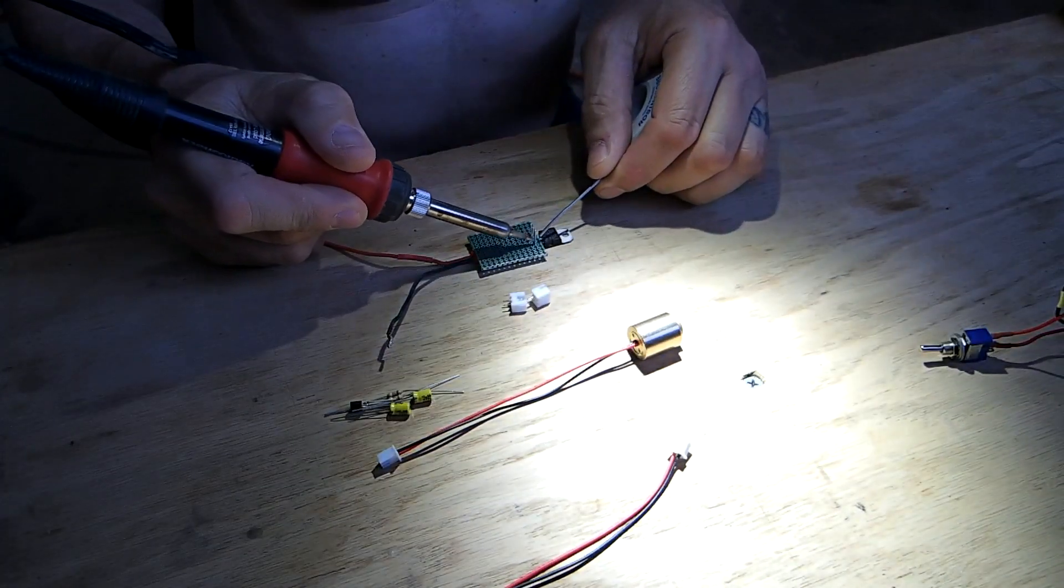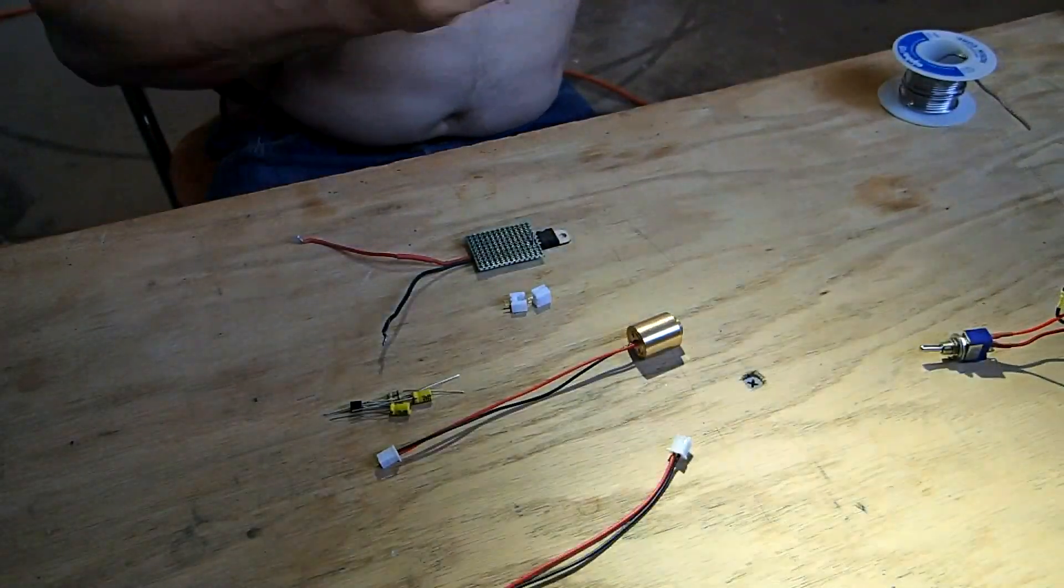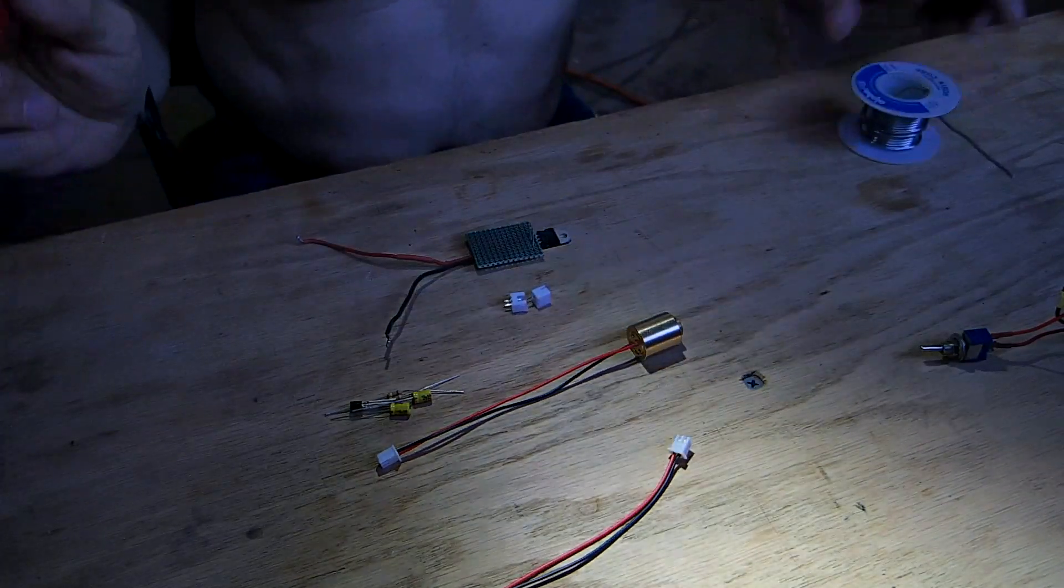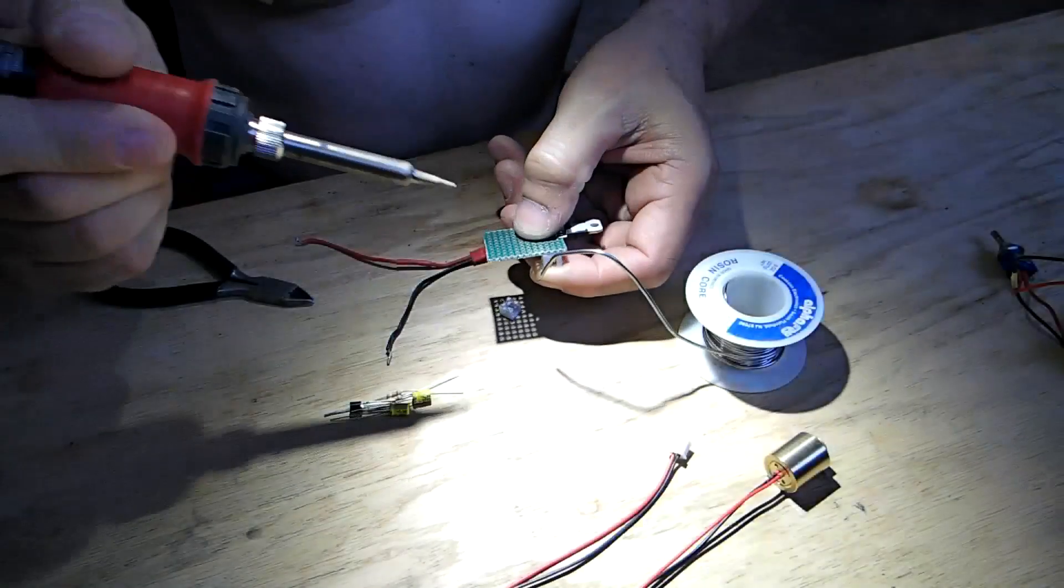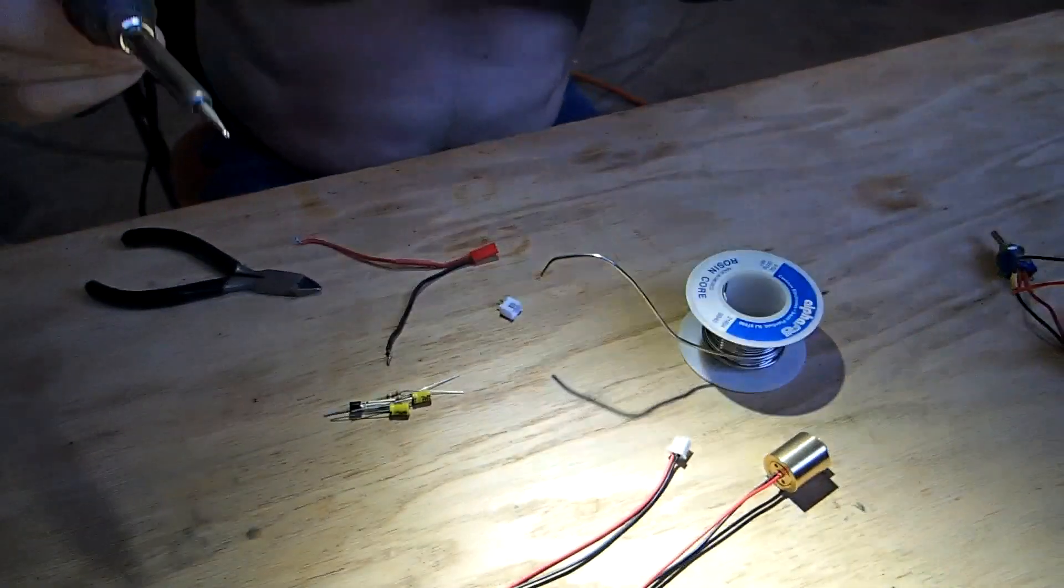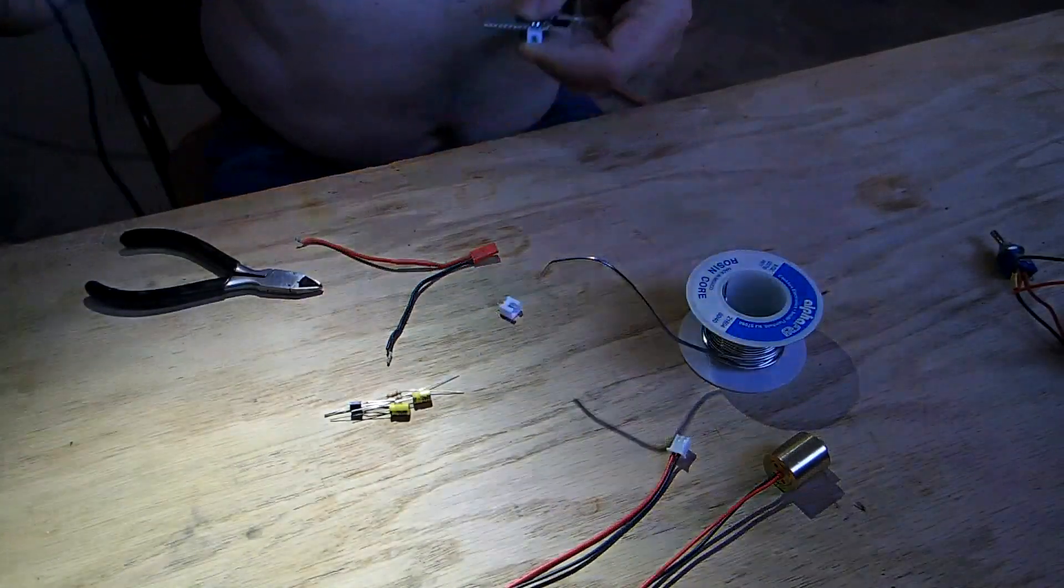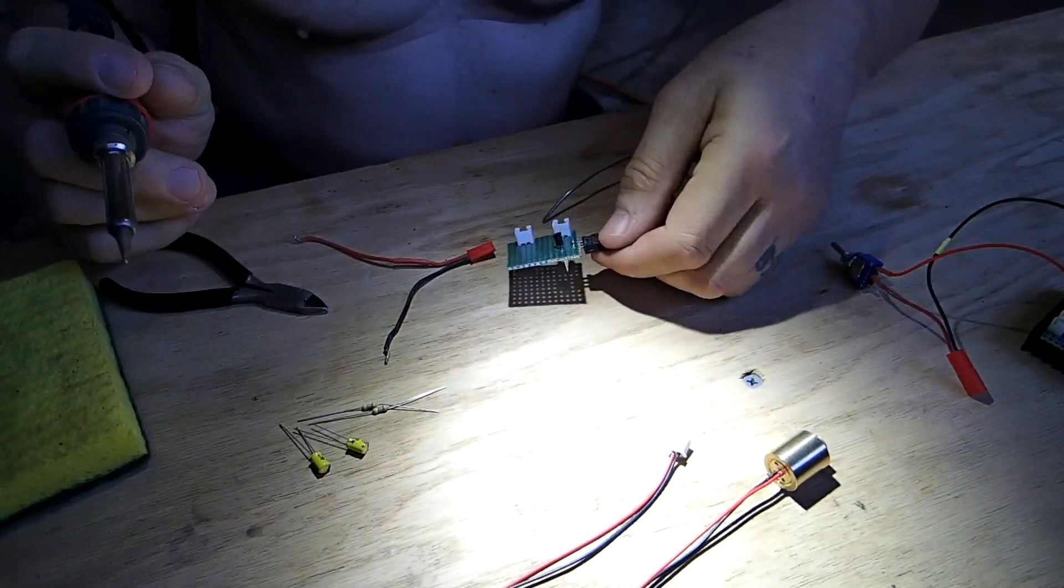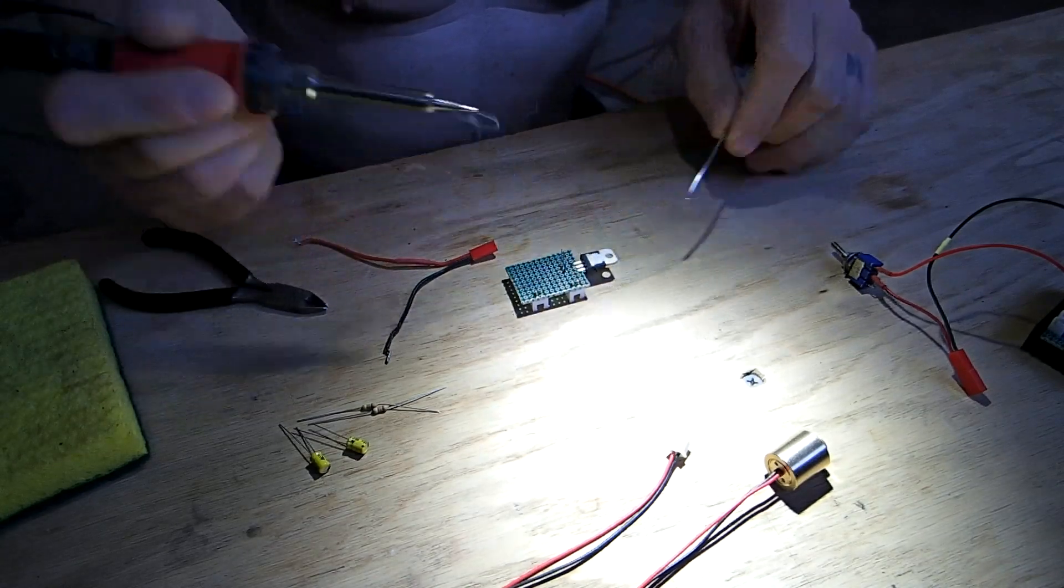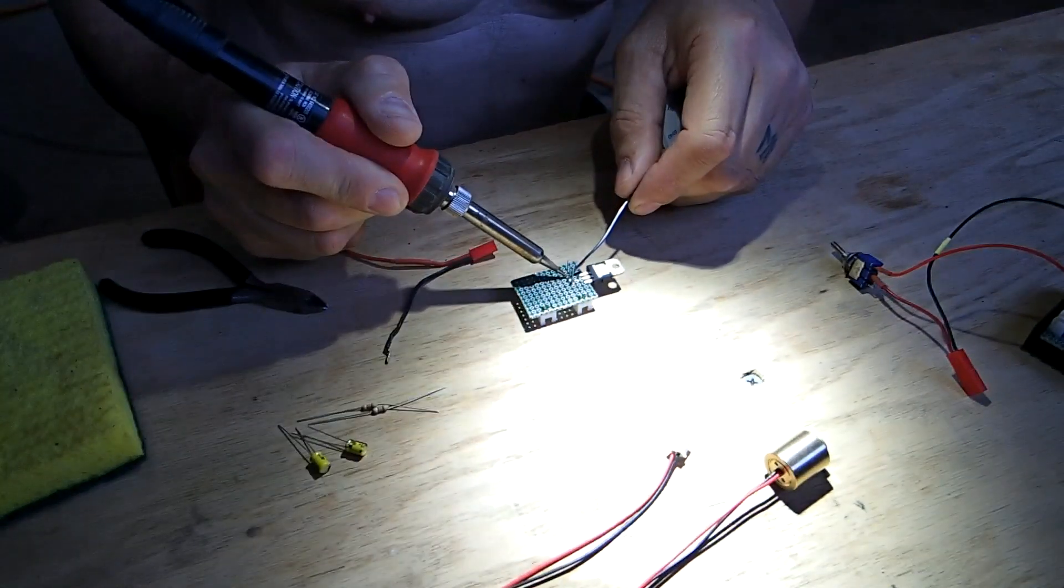First we solder the power transistor. Next we solder in the little connectors. Next we solder in the little 3906 transistor. I got one lead soldered. Then solder in the next one. I didn't want to get it too hot. Cool it between each soldering.